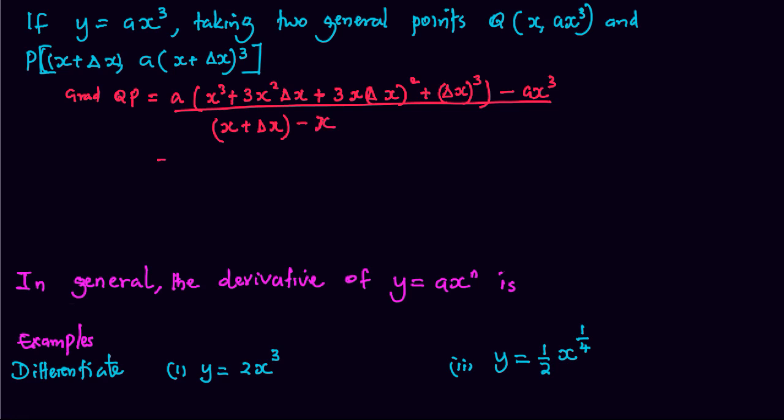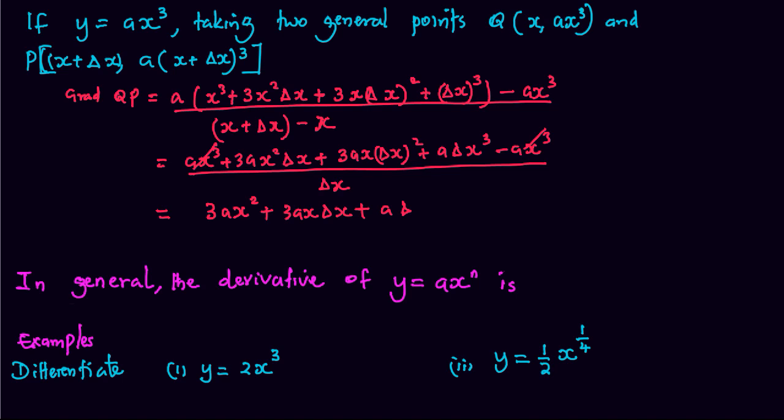This gives us Ax cubed plus 3Ax squared delta x plus 3Ax delta x squared plus A delta x cubed minus Ax cubed divided by delta x. This and this cancel out, we remain with 3Ax squared plus 3Ax delta x plus A delta x squared.